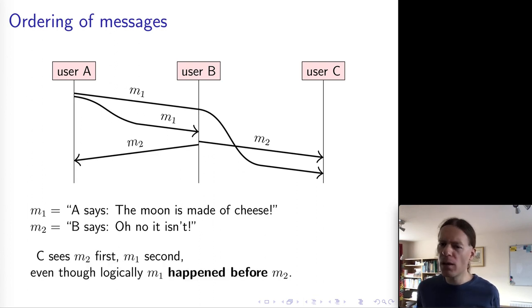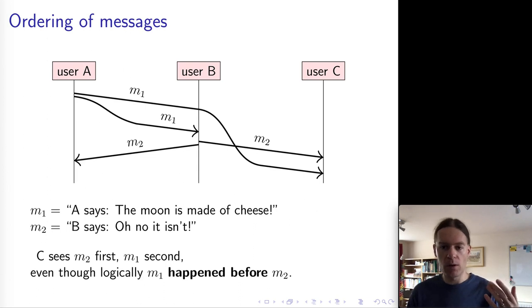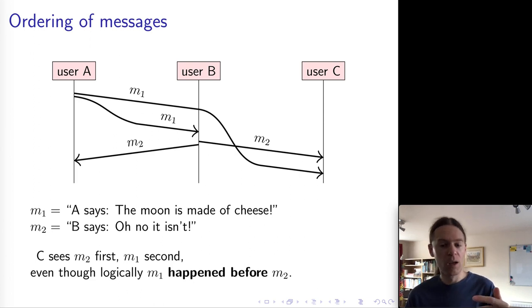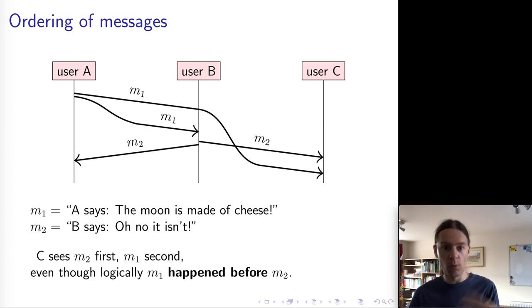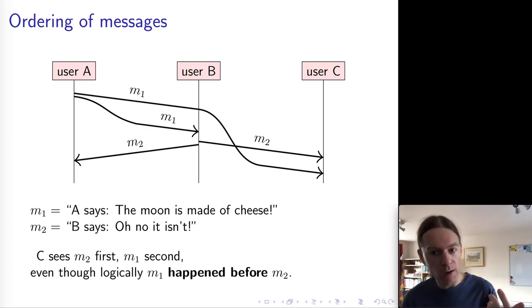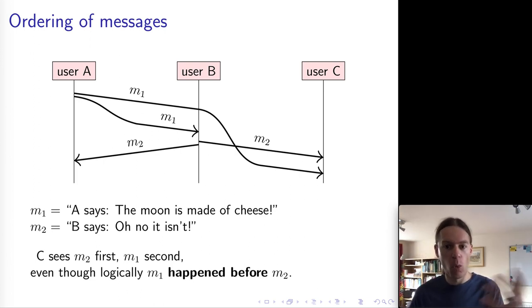This is kind of confusing, because if you imagine user C is looking at this thread, user C first sees 'no, it isn't,' and then 'the moon is made of cheese.' So even though 'no, it isn't' really should be a reply to 'the moon is made of cheese,' we have ended up reordering those and we've got the reply before the thing that it's replying to.